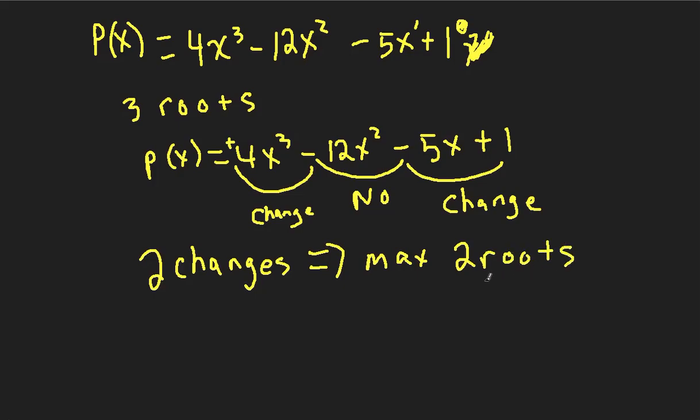But that doesn't mean that two roots are the only amount of positive roots we have. We could have less. I went further in class in detail why the second part of Descartes' rule says that we need to decrease that maximum number by even integers of two because we need to take into account the complex roots. So if we start at two, the only other possibility less than two would be zero because we're decreasing by two. So we could have two roots or zero roots.